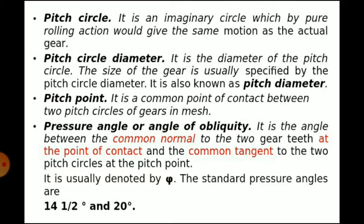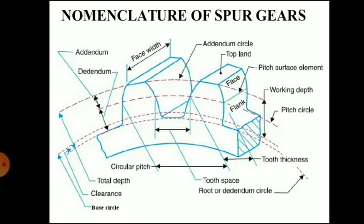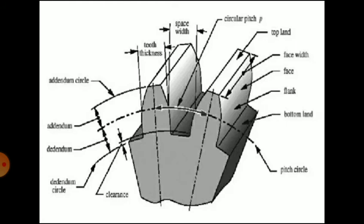Pitch point is the point of contact between the pitch circles of two gears in mesh. The pressure angle, also called angle of obliquity, is the angle which the common normal to the two teeth at the point of contact makes with the common tangent to the two pitch circles at the pitch point.